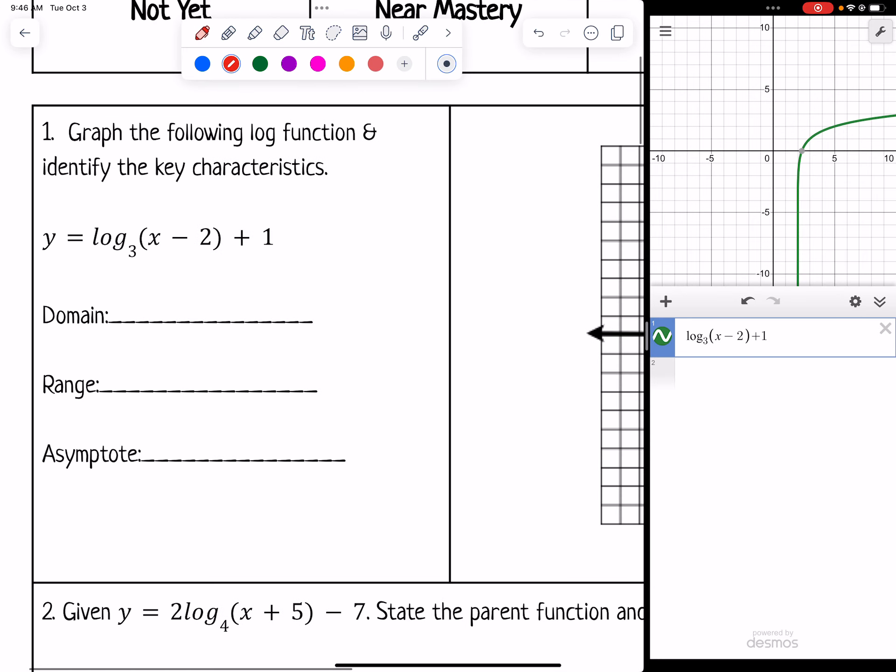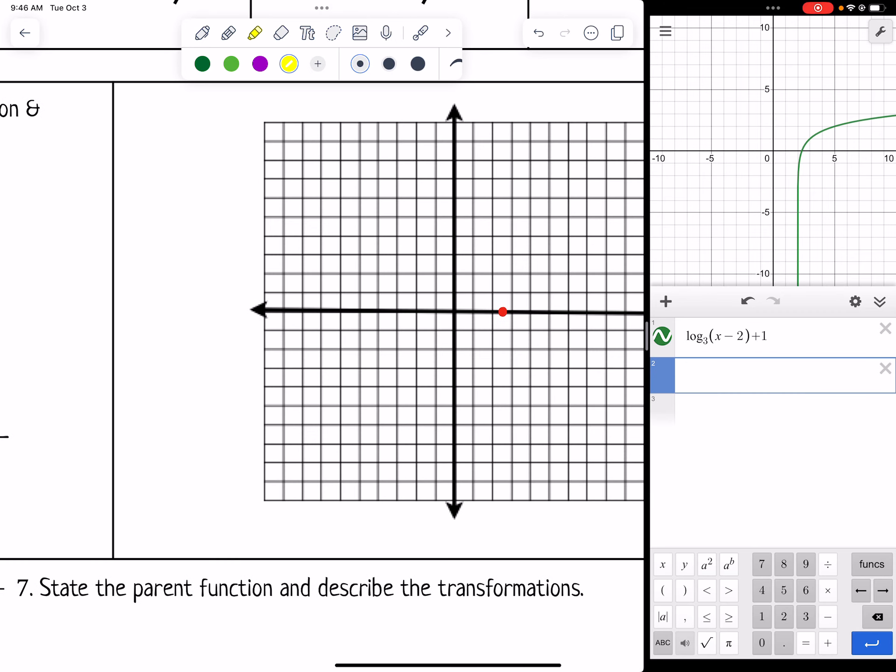I can tell from the function that it went to the right 2. I can tell from Desmos it looks like it does have a vertical asymptote at x = 2. So I'm going to sketch that imaginary line, and then I'm going to sketch my log function like it looks on Desmos.